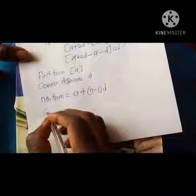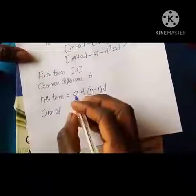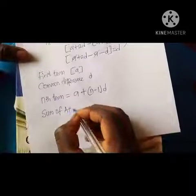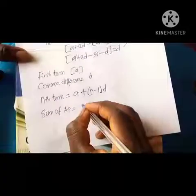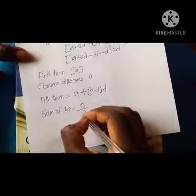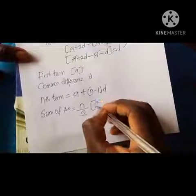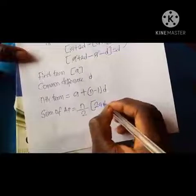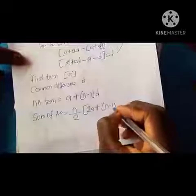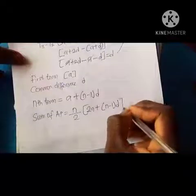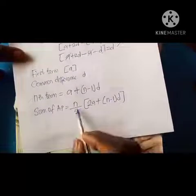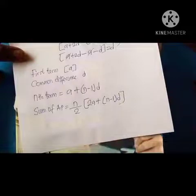The sum of an AP is: S(n) = n/2 × (2a + (n−1)d). It's not that difficult — you'll see how it works when we begin doing exercises.